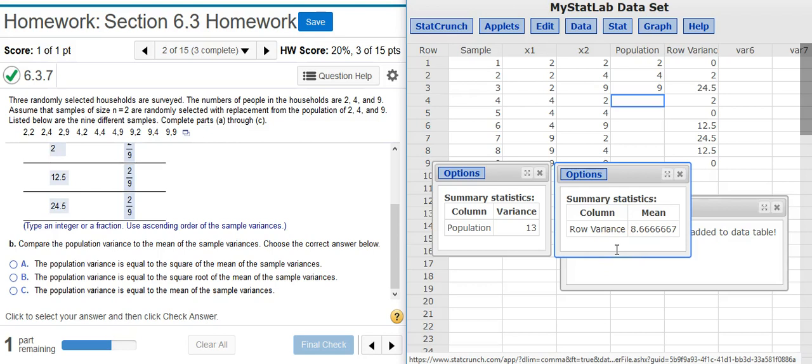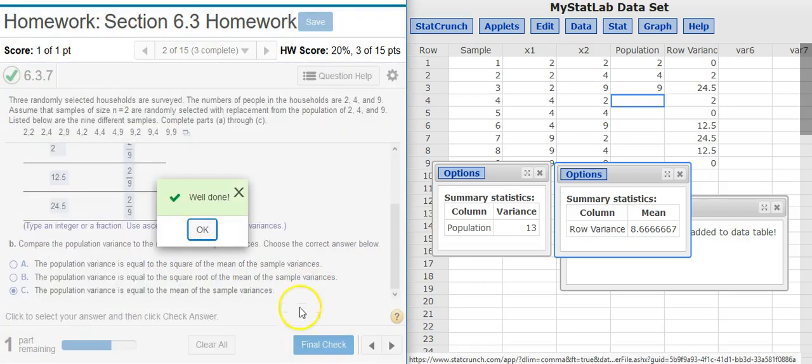Here we're talking about variances. Variance is an unbiased estimator, so the mean of the sample distribution should be the same as the population parameter. So in this case we want to select the one where they're the same, so equal to the mean of the sample variances. Well done.